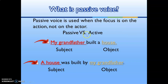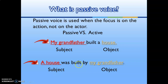Example: 'My grandfather built a house.' Here 'my grandfather' is the subject and 'house' is the object. In passive voice: 'A house was built by my grandmother.' Notice we always use 'by' in the passive sentence — that is the link for passive voice, and the subject becomes an object.